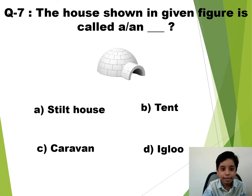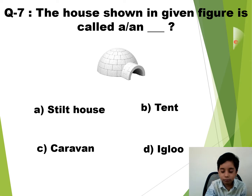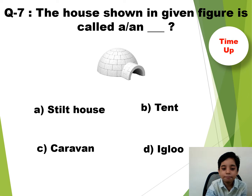Question number 7. The house shown in the given figure is called A and dash. The time starts now. Time up. So the answer is D — Igloo.